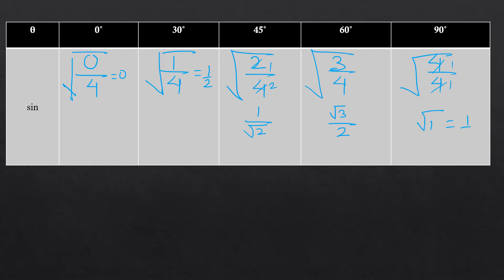So the values we get are: sin 0° = 0, sin 30° = 1/2, sin 45° = 1/√2, sin 60° = √3/2, and sin 90° = 1.